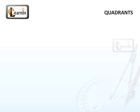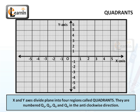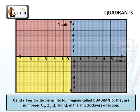Quadrants. The x and y axes divide the Cartesian plane into four regions, and these regions are called the quadrants.